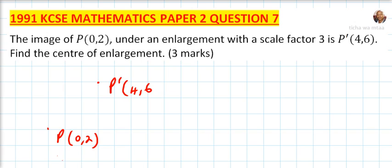So we can join these two points like that. We can put the center of enlargement, let's say the center of enlargement possibly O, that is x and y. So what we are required to find is the value of x and the value of y.